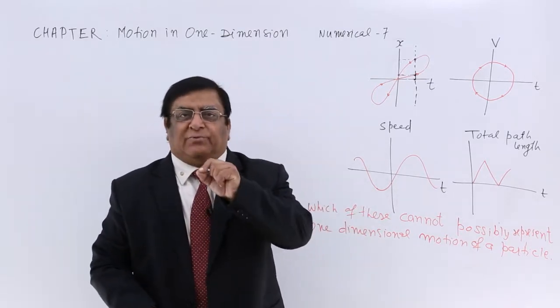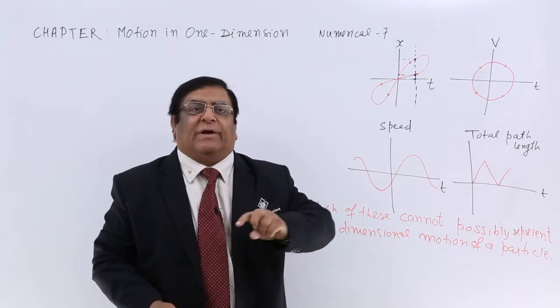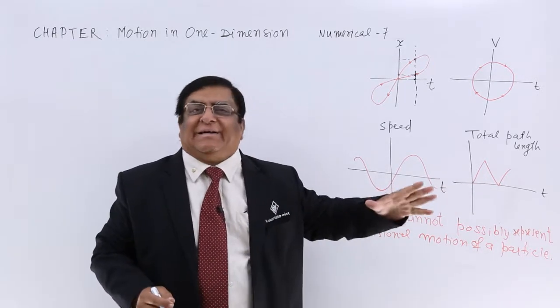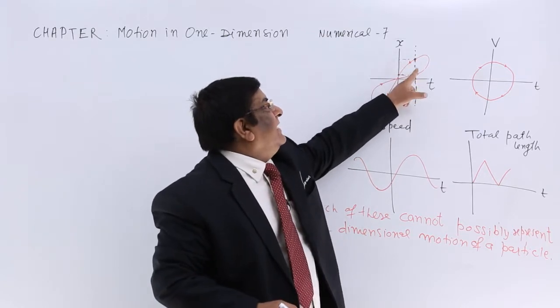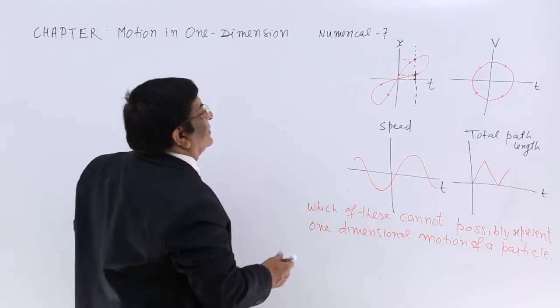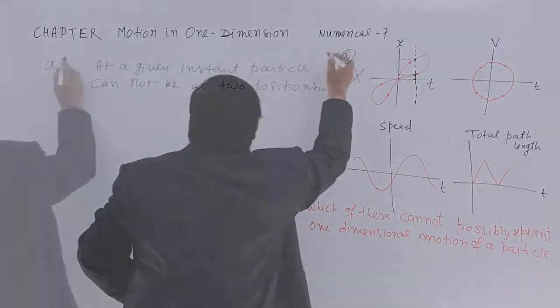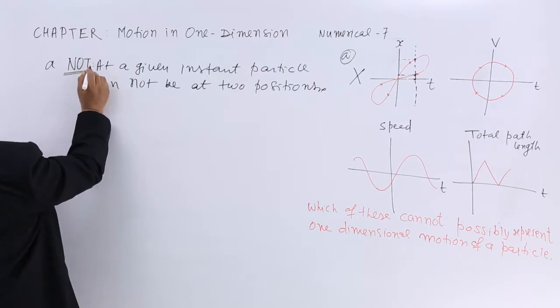Now one particle which is doing one-dimensional motion at any one instant cannot be located at two locations at a time. And this shows that at a time the particle is at two locations. This is not possible. So this is not possible.